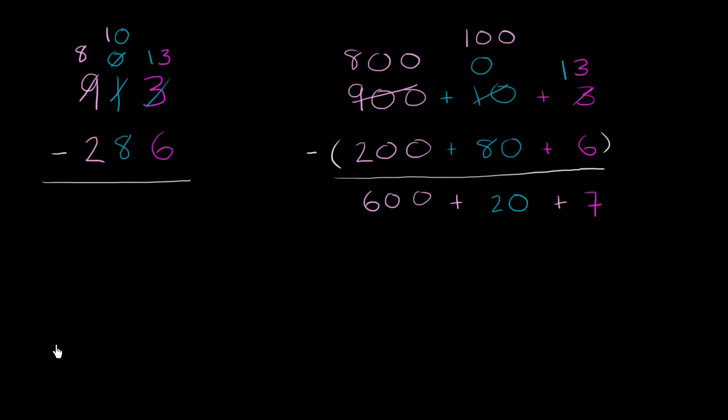13 minus 6 is 7. 10 minus 8 is 2. Remember, this is really 10 10's minus 8 10's to get 2 10's. 100 minus 80 to get 20. And then finally, we have 800 minus 200 to get 600. 627.